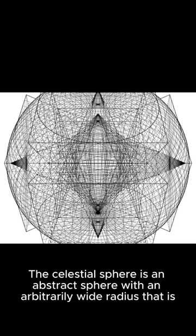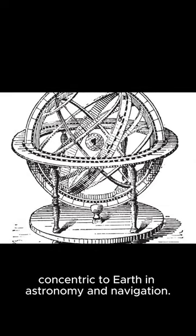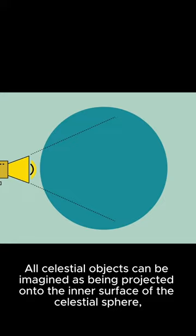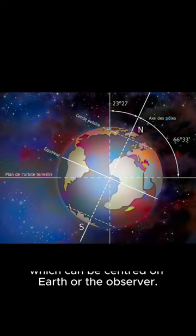The celestial sphere is an abstract sphere with an arbitrarily wide radius, concentric to Earth. In astronomy and navigation, all celestial objects can be imagined as being projected onto the inner surface of the celestial sphere.